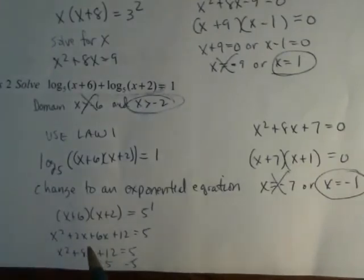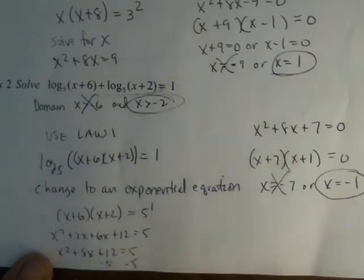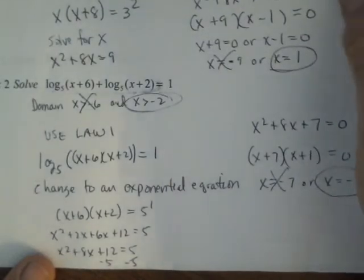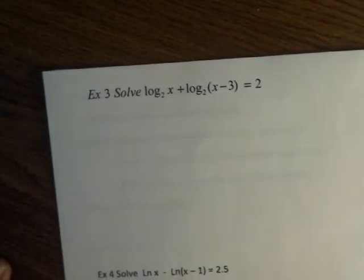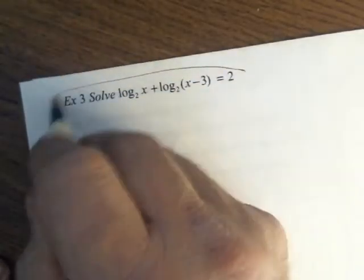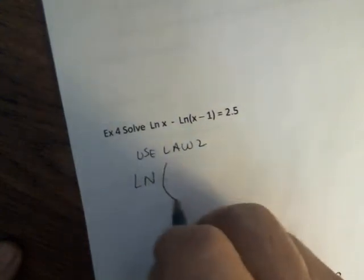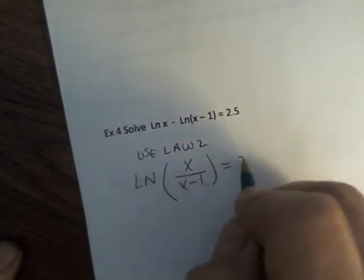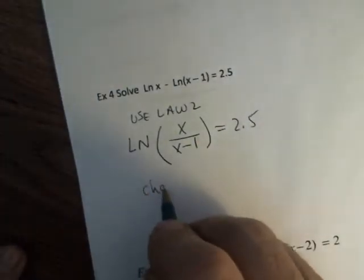Okay. So, you know, you just got to remember your steps. Rewrite. Get it as a single log. Change to your exponential equation. And then solve from there. All right. So that's these logarithmic equations using your laws where we use law 1. We have another one where we do the same thing. I'm going to save that for class. And let's skip on down to where we use law 2. So, for law 2, again, I will use law 2. And I'm going to get the natural log of x over x minus 1 is 2.5.